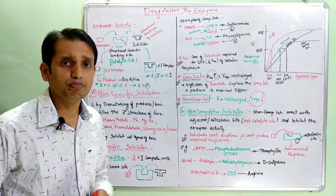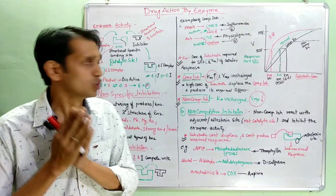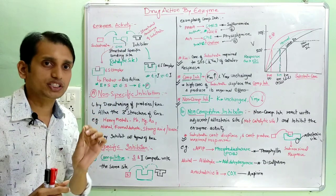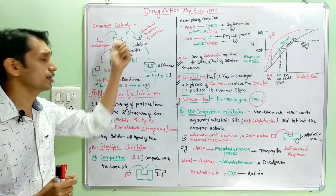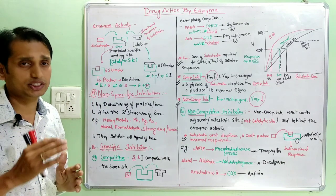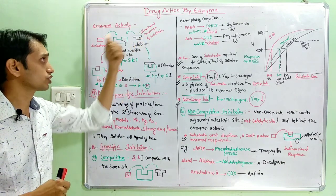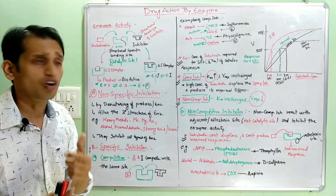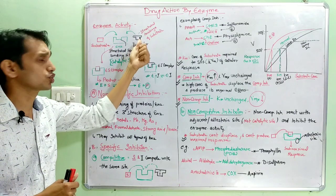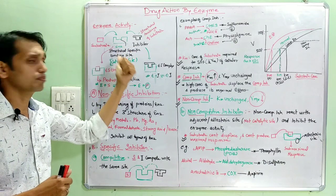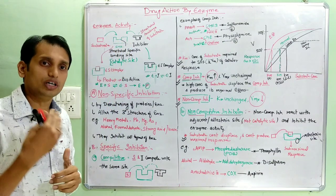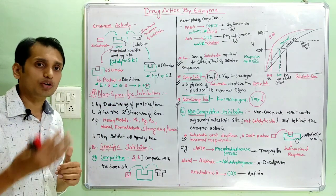First we should know the basic concept of enzyme activity. An enzyme has a structure-specific binding site known as the catalytic site, and in this site the substrate can bind based on its structural nature. The inhibitor is a structural analog of the substrate — they have a similar structure to the substrate — and can also bind to the enzyme's catalytic binding site, since the binding site is the same.